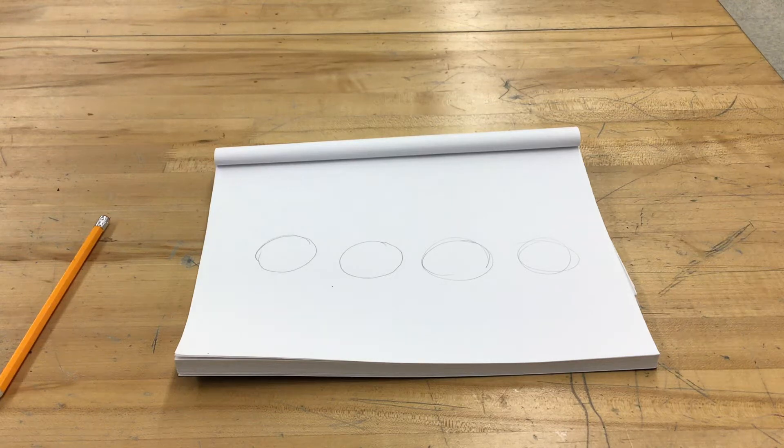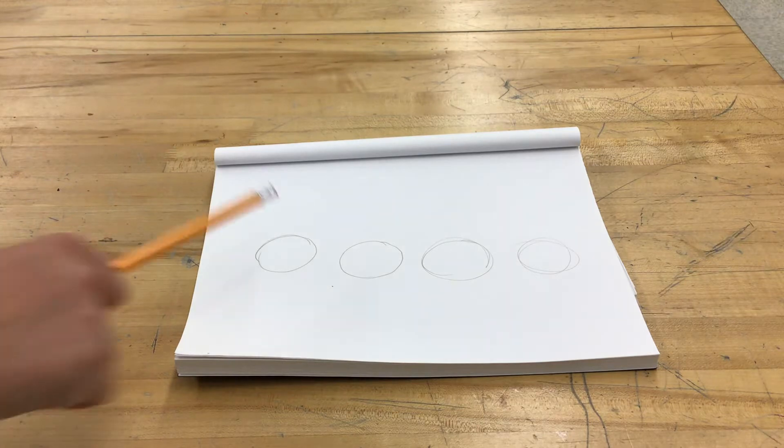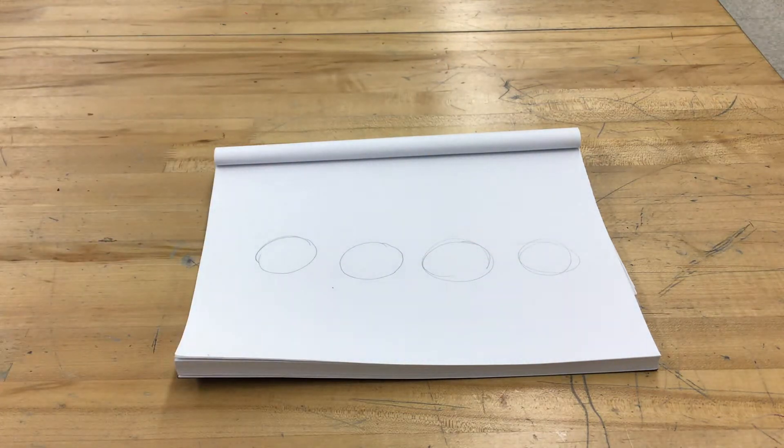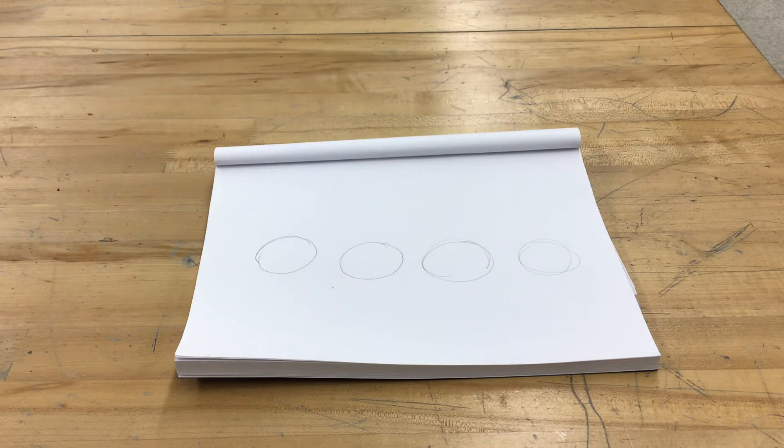Today I am going to be showing you different coloring techniques. So you need to draw four circles on your paper. These can be big or they can be the size that mine are.